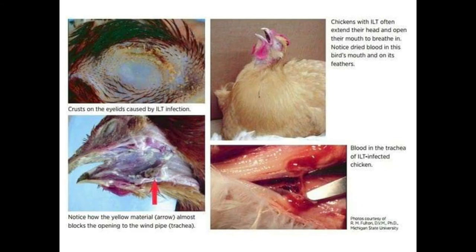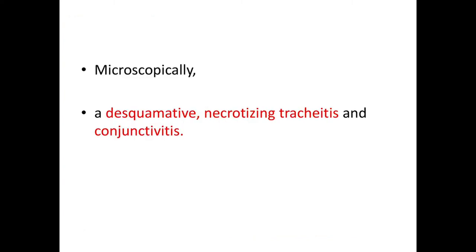These are other lesions found in ILT. The top-left picture shows crust on the eyelids, top-right shows a chicken with characteristic pump handle respiration with extended head and open mouth and dried blood in the mouth and feathers. The bottom-left shows material blocking the opening of the windpipe, and another picture shows blood in the trachea. Microscopically, a desquamative necrotizing tracheitis and conjunctivitis is characteristic for ILT.